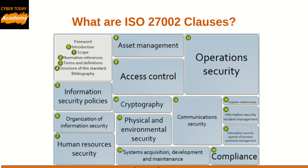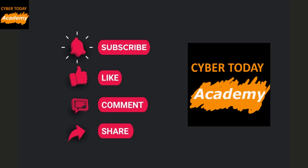Continuing the main clauses: 9. Communication security — network security management and information transfer, 10. System acquisition, development and maintenance — security requirements of information systems, security in development and support processes, and test data, 11. Supplier relationships — information security in supplier relationships and supplier service delivery management, 12. Information security incident management — management of information security incidents and improvements, 13. Information security aspects of business continuity management — information security continuity and redundancies, 14. Compliance — compliance with legal and contractual requirements and information security reviews. End of the lesson. Thank you for watching.